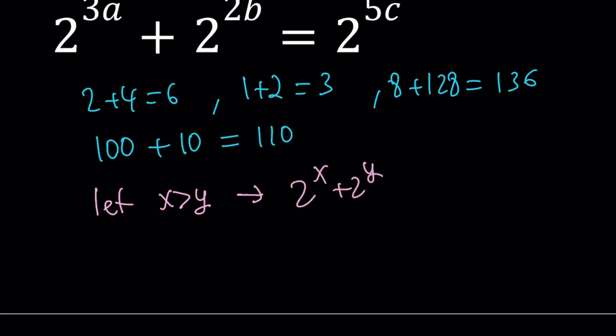And suppose you have this following sum, 2 to the power x plus 2 to the power y. I'm just going to show you why you're not going to get a power of 2 by adding two different powers of 2. So since y is smaller, we can go ahead and take out a 2 to the power y here, and that's going to give us 2 to the power x minus y plus 1.